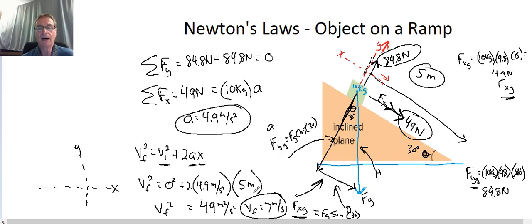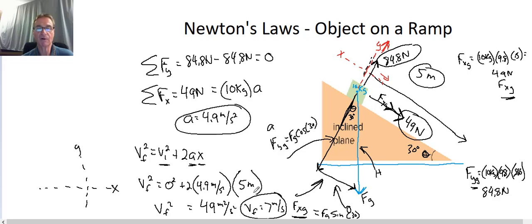The key to solving this problem was creating our own coordinate system — perfectly valid — to match the motion of the object. The motion of our object was not in our traditional x-y coordinate system, so we had to turn and twist our coordinate system to match it. After that, it was just finding the forces, writing the equations, and solving the problem. I hope that helps, and have a great day.